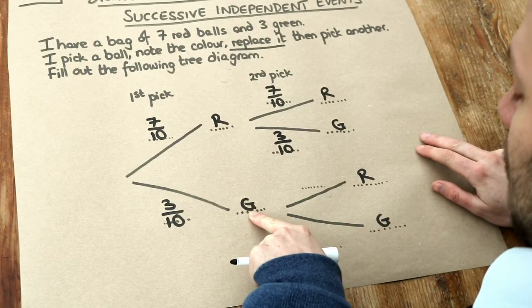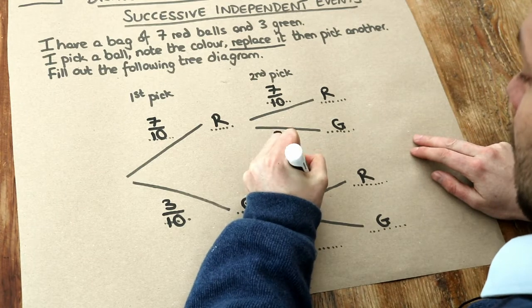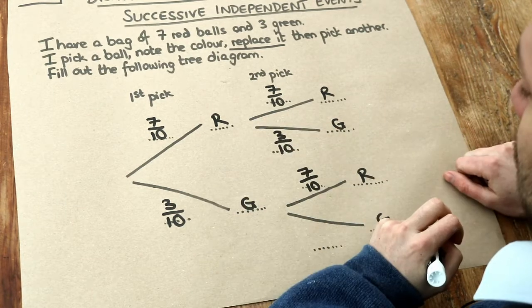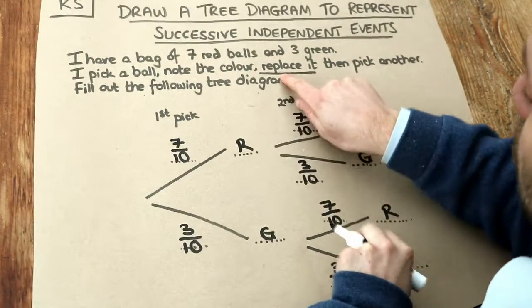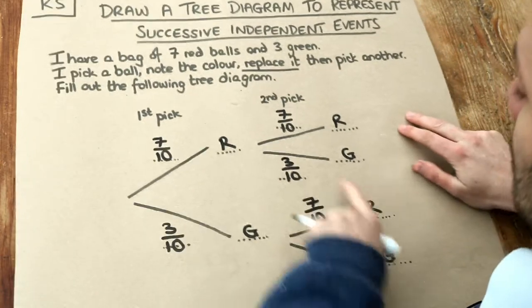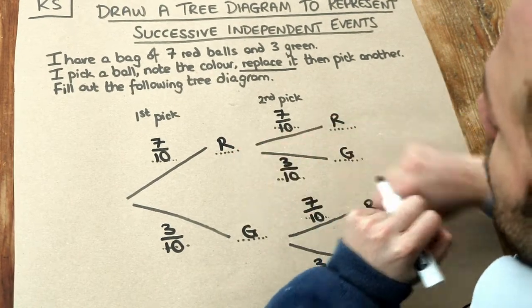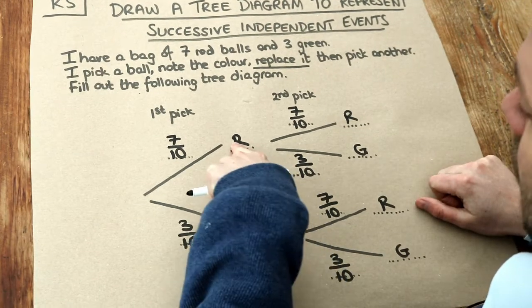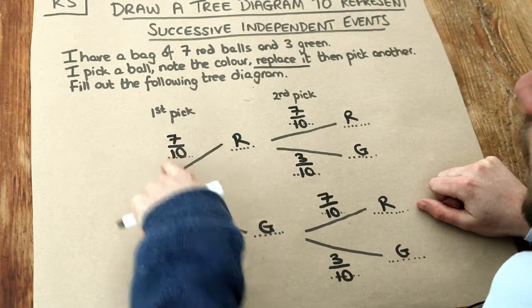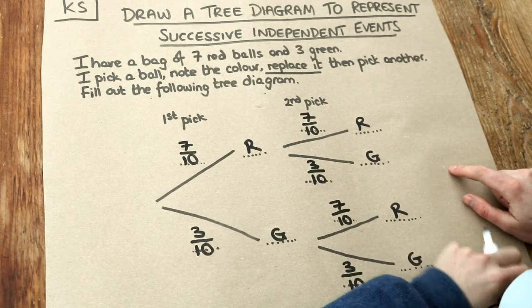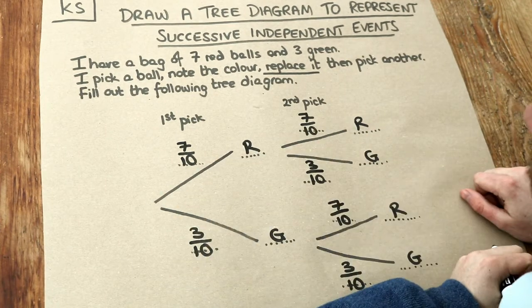Similarly, if we picked a green, picking a red is still 7 tenths because we've still got 7 red balls out of 10 balls in total, and it's still going to be 3 tenths probability of picking green. So if we put the ball back — replace it — the probabilities on the second pick for red and green stay the same as the first pick. Just remember: we put the outcomes (red, green) at the end of the line, and on the actual line itself that's where we put our probabilities. In the next video we'll see how we can use this tree to calculate a sequence of probabilities.